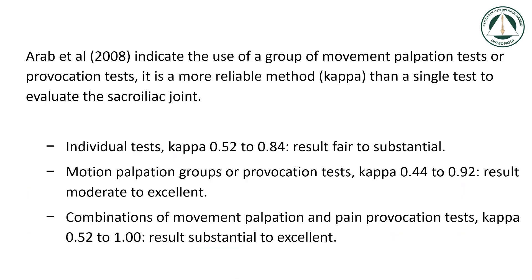Aribet al. 2008 indicate that the use of a group of movement palpation tests or provocation tests is a more reliable method than a single test to evaluate the sacroiliac joint. Individual tests showed kappa 0.52 to 0.84, result fair to substantial. Motion palpation groups or provocation tests showed kappa 0.44 to 0.92, result moderate to excellent. Combinations of movement palpation and pain provocation tests showed kappa 0.52 to 1.00, result substantial to excellent.